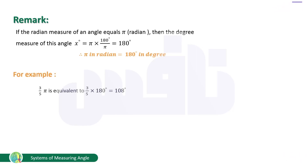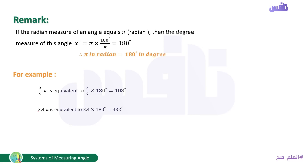For example: the angle (3/5)π in radian measure — to convert to degrees, replace π with 180: (3/5) × 180 = 108°. Similarly, 2.4π rad: replace π with 180 — 2.4 × 180 = 432°.